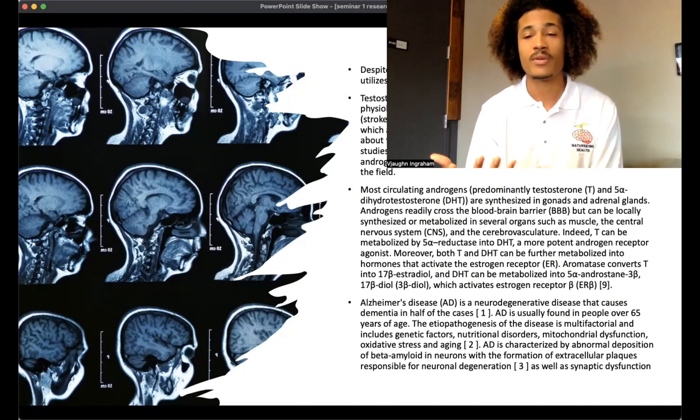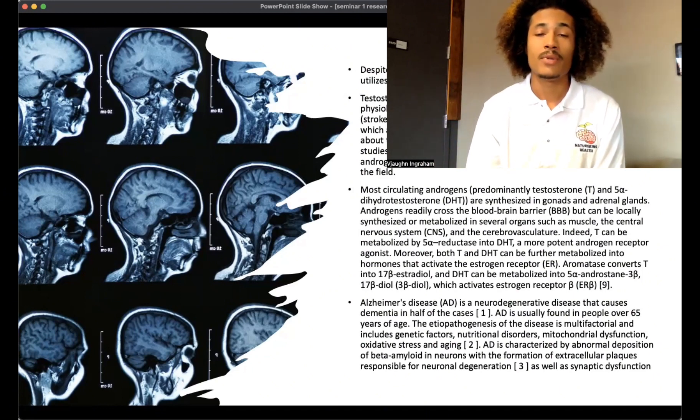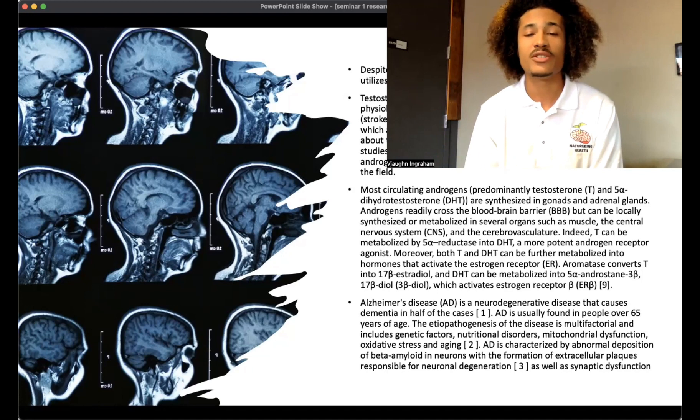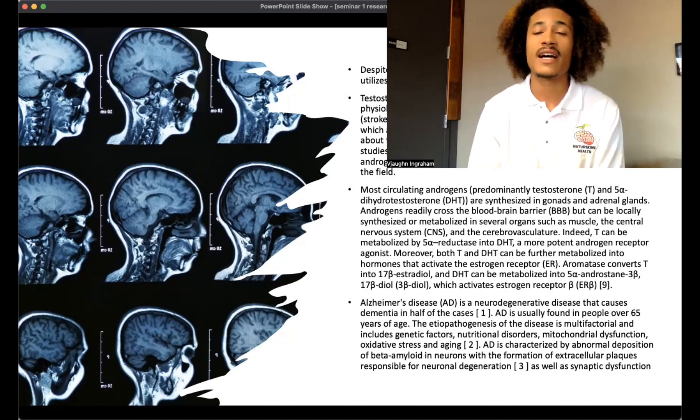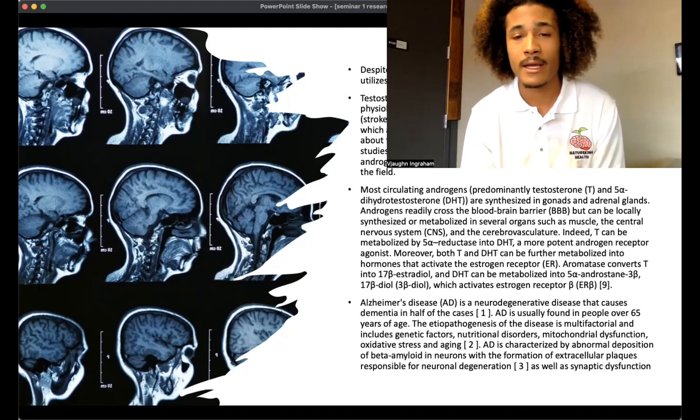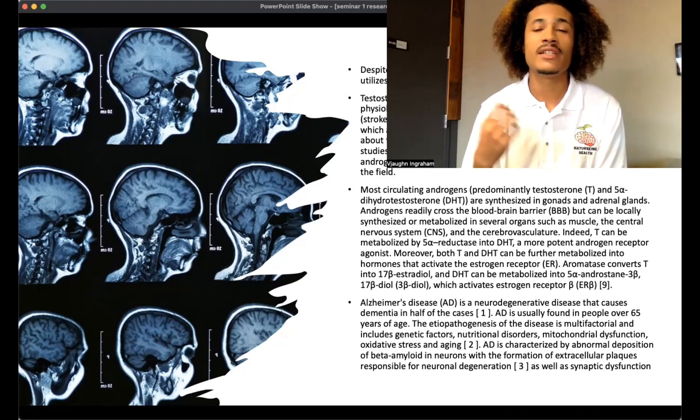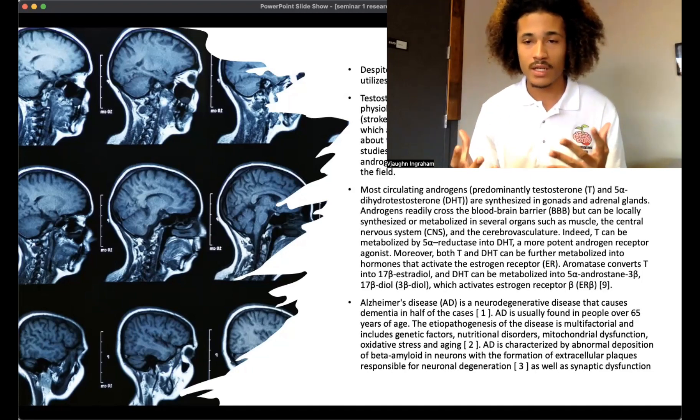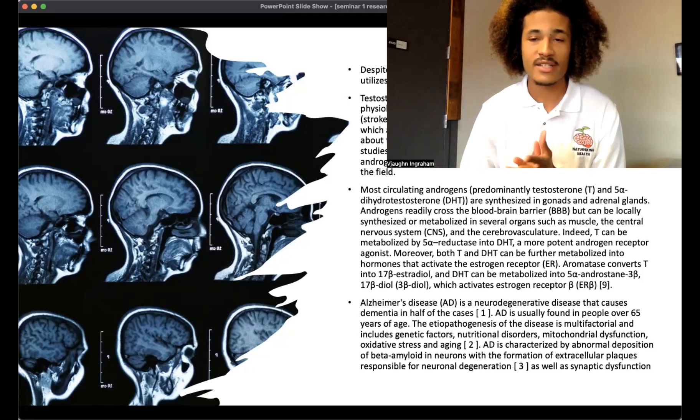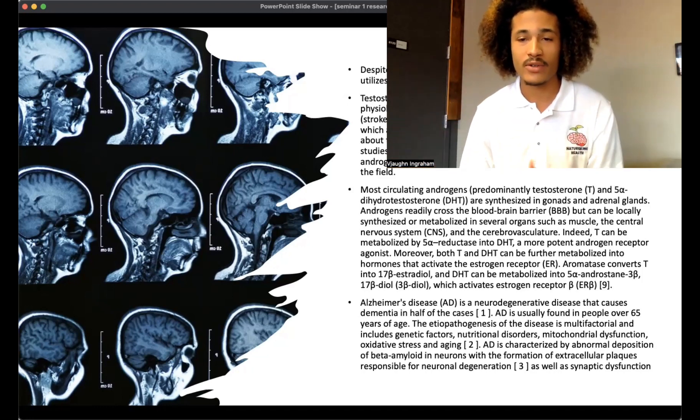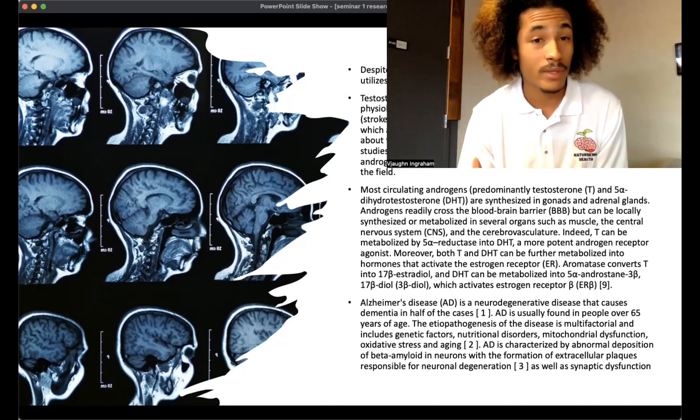But in this research, I'll be focusing on testosterone. Most circulating androgens are testosterone and dihydrotestosterone and are synthesized in something called the gonads and also the adrenal glands, which are above the kidneys. Androgens readily cross the blood-brain barrier, and the blood-brain barrier is basically your blood vessels and its interaction with the fluid and the gray matter and white matter of the brain. It's very selectively permeable.